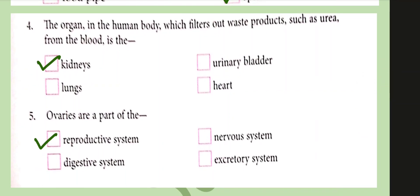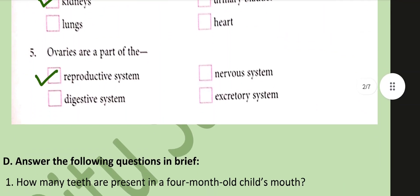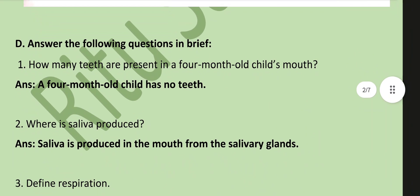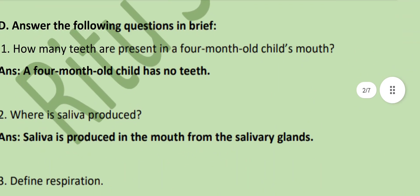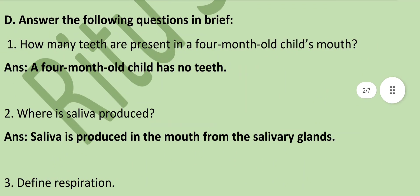How many teeth are present in a four-month-old child's mouth? A four-month-old child has no teeth. Where is saliva produced? Saliva is produced in the mouth from the salivary glands.